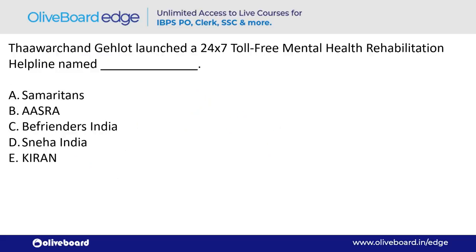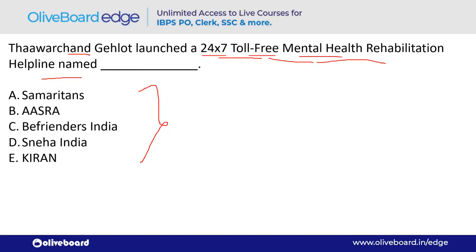Thawar Chand Gehlot, Minister of Social Justice and Empowerment, launched a 24x7 toll-free mental health rehabilitation helpline. What is the name of this helpline? The name is KIRAN — option E.